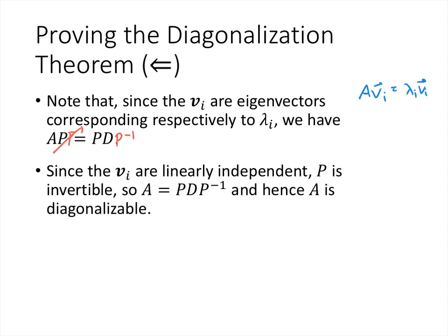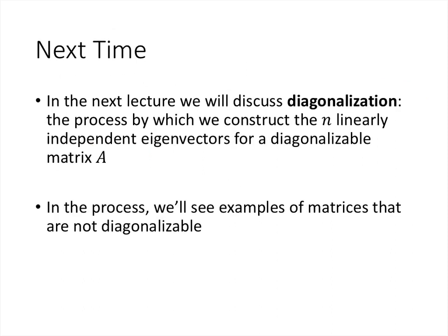The diagonalization theorem tells us when a matrix is diagonalizable, and the proof tells us how to construct the matrices P and D. In the next lecture, we'll go through that process step by step, since there are several steps involved in finding n linearly independent eigenvectors. We'll also see examples of matrices that are not diagonalizable and what goes wrong when we try to diagonalize them.